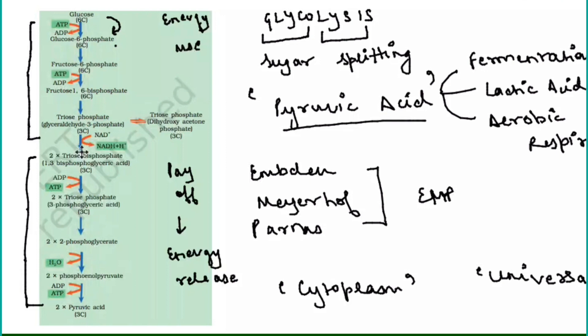The reaction starts with glucose, which is changed into glucose 6-phosphate by the addition of one phosphate. Then the enzyme isomerase changes glucose 6-phosphate into fructose 6-phosphate, since glucose and fructose are isomers of each other. Fructose 6-phosphate is again phosphorylated — another inorganic phosphate is added — to form fructose 1,6-bisphosphate. Energy is consumed at step 1 and step 3, hence this is the energy-use phase.